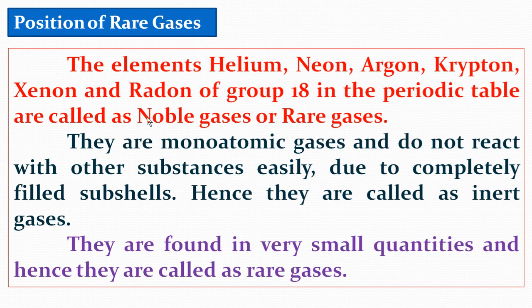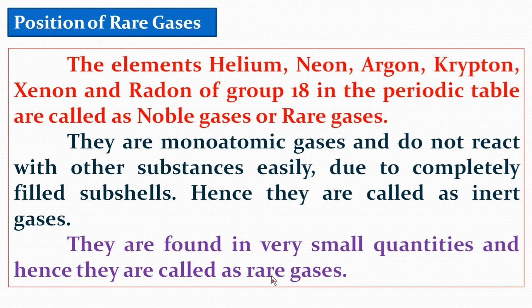The next topic is the Position of Rare Gases, also called inert gases or noble gases. The elements helium, neon, argon, krypton, xenon, and radon of Group 18 in the periodic table are called noble gases or rare gases. They are monoatomic gases — their atomicity is one. They do not react with other substances easily because of their completely filled subshells (s, p, d, f). Hence they are called inert gases. Inert means inactive. They are found in very small quantities, and hence they are also called rare gases.